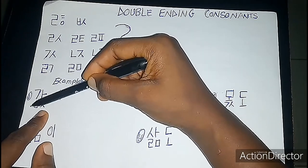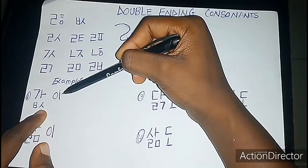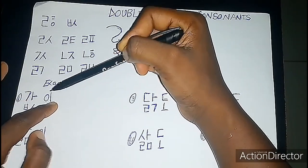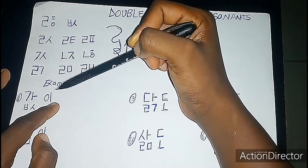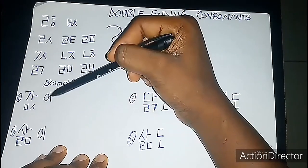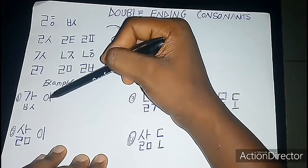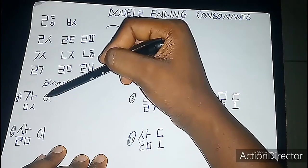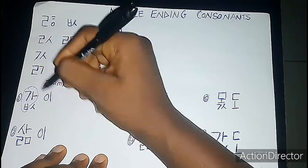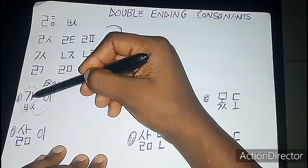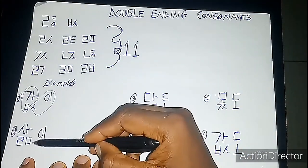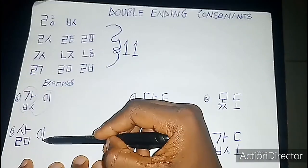For example, you read the first part and transfer that sound over to the next syllable. So it would be pronounced 'gap-si' — gap-si. And another example would be 'sal-mi' — salmi.